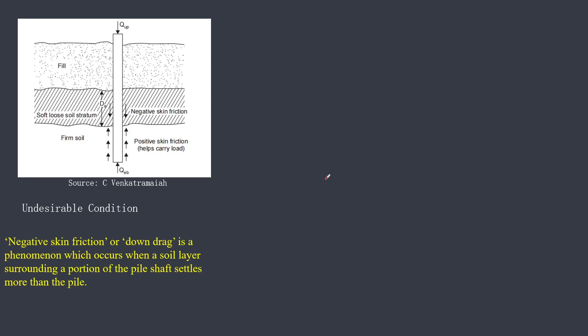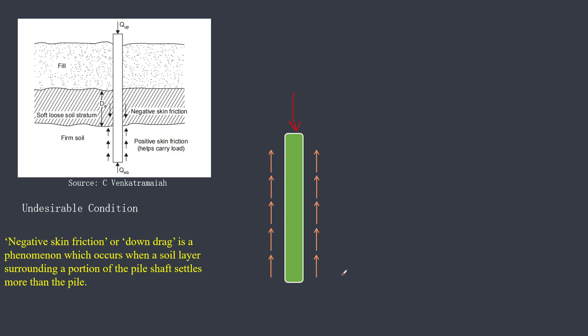In order to understand negative skin friction, we must first understand what positive skin friction is. Imagine you have a pile foundation and you are applying some vertically downward load on the pile. The pile moves in the downward direction, and the resistance from the surrounding soil acts upward. This frictional resistance opposes the downward movement, and this is called positive skin friction.